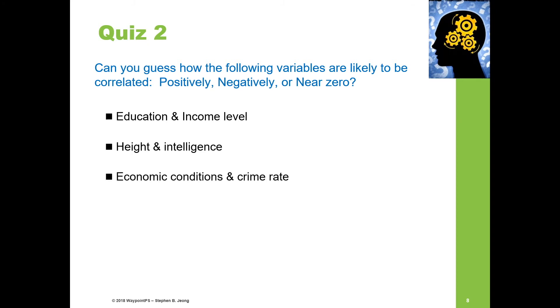Economic conditions and crime rate—we talked about this already. As economic conditions improve, crime rates should go down, indicating a negative correlation. Amount of time spent arguing and likelihood of divorce: as the frequency of arguments increases, we would expect the likelihood of divorce to also increase, giving us a positive correlation.